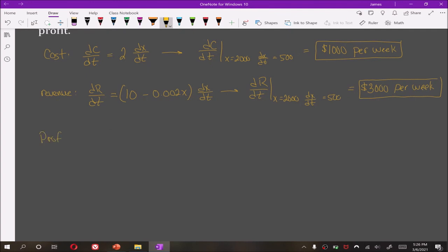For profit there are two ways we can go about it. We can find the profit function and then take its derivative and plug in the knowns, or we can recognize that dP/dt when x is 2000 and dx/dt is 500 would equal the derivative of revenue at those values minus the derivative of cost at those values. And we already evaluated those so this is going to be $3,000 minus $1,000, so our profit is increasing at a rate of $2,000 per week.